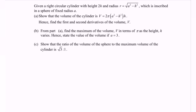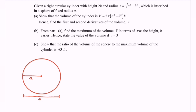Given a right circular cylinder with a height 2h and the radius r equals to the square root of a squared minus h squared. The right circular cylinder is inscribed in a sphere of fixed radius a. I'm going to illustrate the situation. We have a sphere with a fixed radius a, with center and radius a, so the diameter would be 2a. The right circular cylinder has radius r and height 2h based on the question.